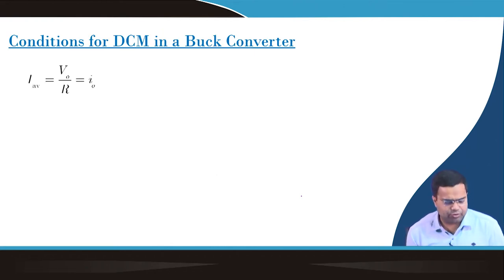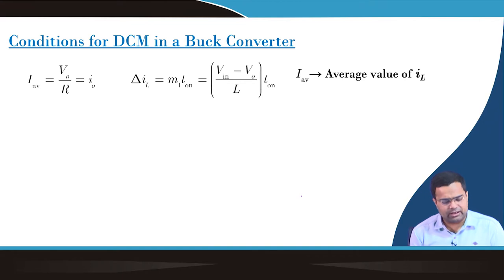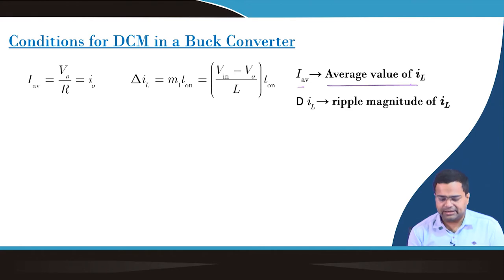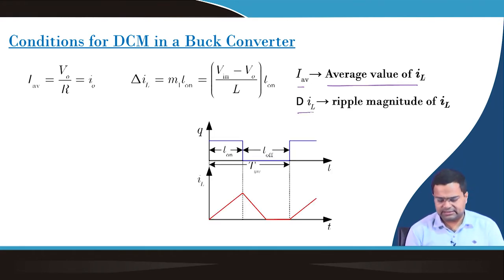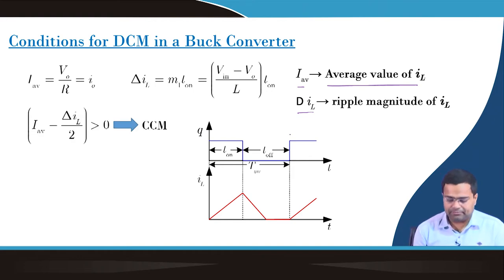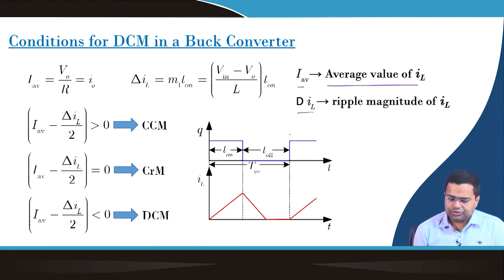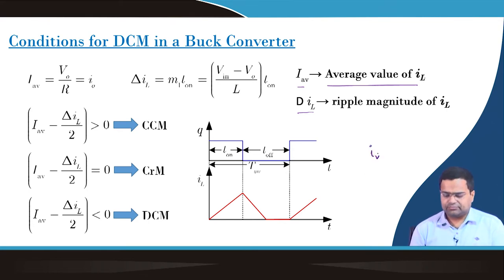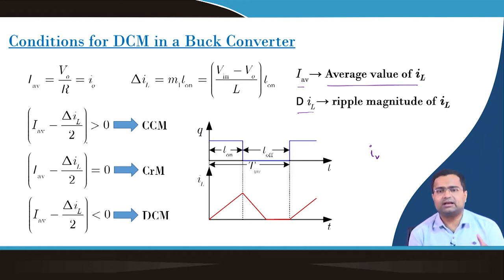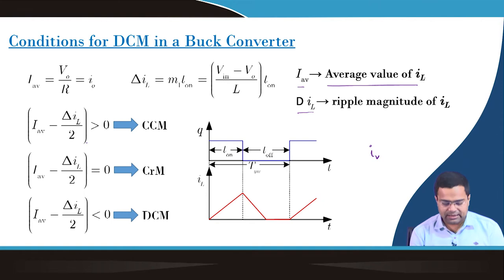During discontinuous conduction mode, the average inductor current — which for a buck converter equals the average load current — can be used to find the ripple current. The valley current is I_average minus delta I0 over 2. If this valley current is greater than zero, the converter is in CCM; if equal to zero, it is in critical conduction mode (CRM); and if less than zero, it has entered DCM.